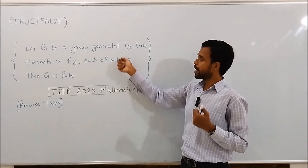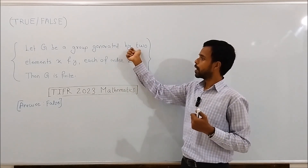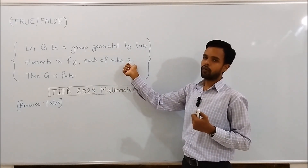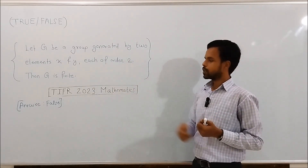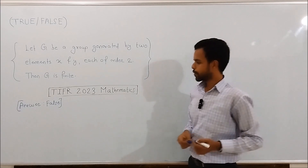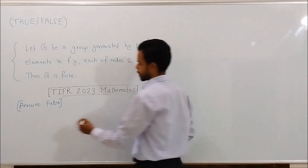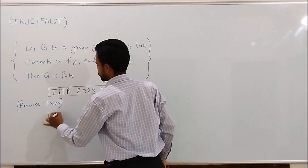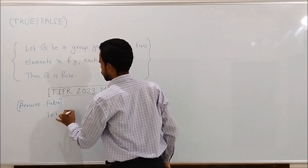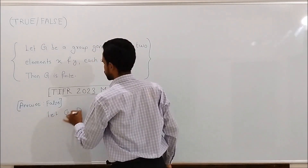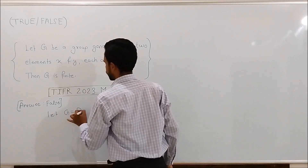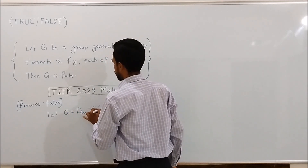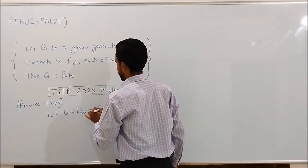That is, we will construct an infinite group generated by two elements x and y, each of order 2. Let G be D∞, that is, the dihedral group of infinite order.